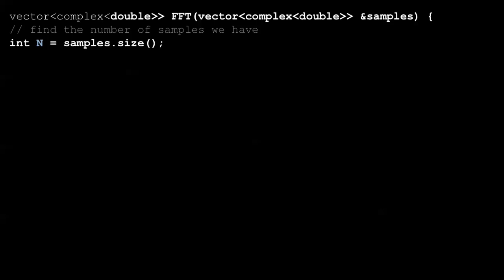First, we need to declare the FFT function which outputs a complex vector and also takes a complex vector as an input. Here I'm passing the vector called samples which contains all the samples which had earlier denoted as x. First, we find n, which is the number of samples that we have in our vector array.